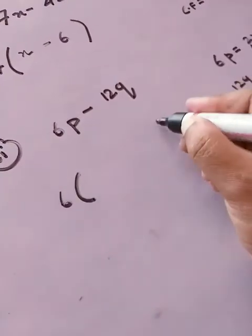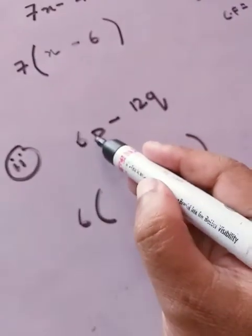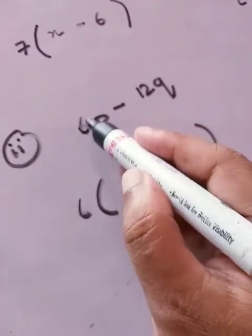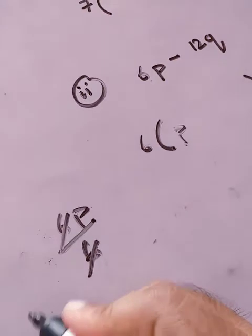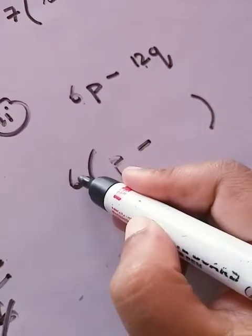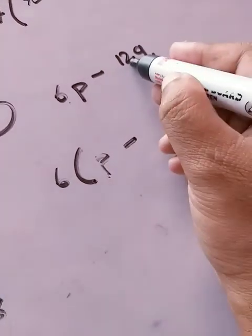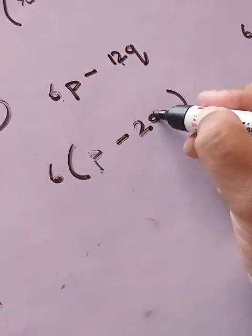So 6 will be taken outside the bracket. Now if I take 6 from here, what will remain? p, isn't it. What I am doing is dividing 6p with 6, so 6 will be cancelled and p would be remaining. Now if we divide 12 with 6, what is the answer? 12 divided by 6 is 2. So 2q would be the answer.